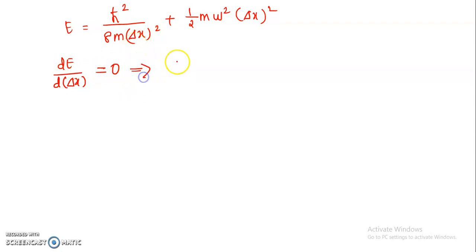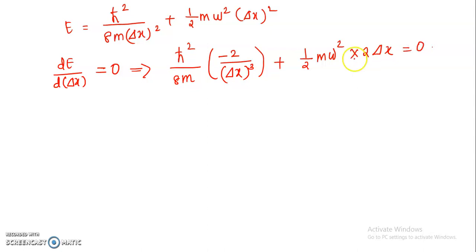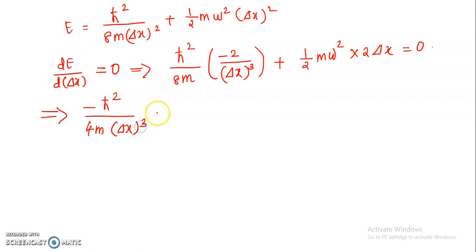Differentiating the above equation, we get −ħ² / (4m·Δx³) + half mω² · 2Δx = 0. That implies −ħ² / (4mΔx³) + mω²Δx = 0.